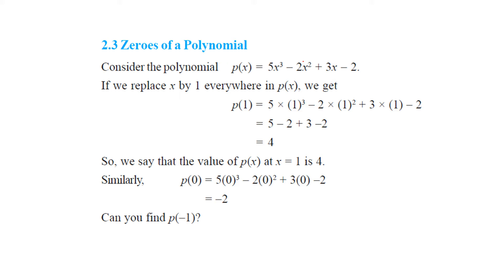Zeros of a polynomial. What is zeros of a polynomial? For any value of x, if this polynomial becomes 0, we call it as a zero of that polynomial.